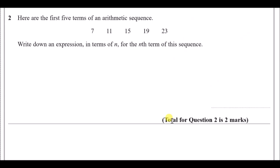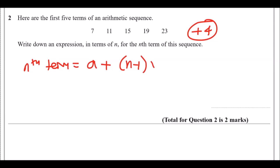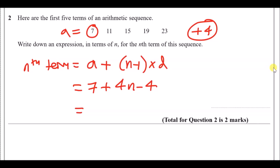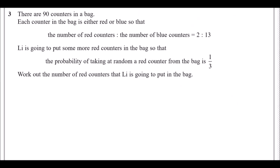Number 2: here are the first five terms of an arithmetic sequence — 7, 11, 15... and so on, going up in fours. To find the nth term, use the formula: first term a plus (n minus 1) times d. With a = 7 and d = 4, you get 7 + (n−1)×4 = 7 + 4n − 4, which simplifies to 4n + 3.